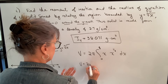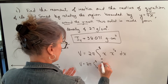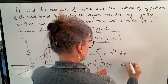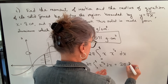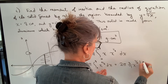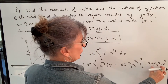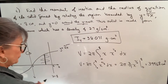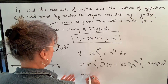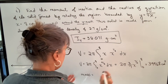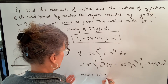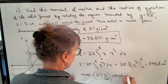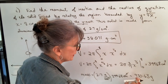Simplifying, that will be x to the 4/3, and then we integrate to get 3/7 times x to the 7/3. We get a volume of 344.68 cubic centimeters. Now I want to find mass. Mass equals the density times the volume, so 2.7 grams per cubic centimeter multiplied by 344.68 cubic centimeters gives us a mass of 930.63 grams.